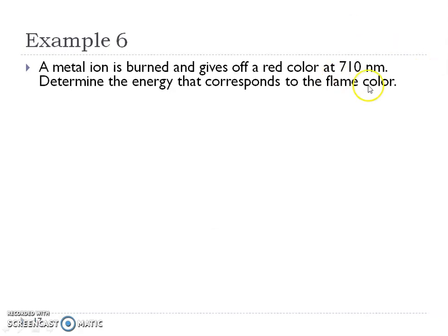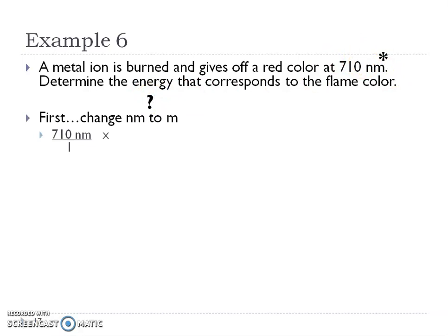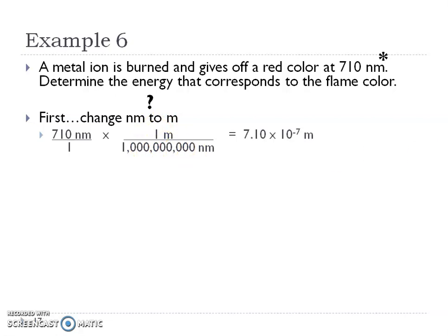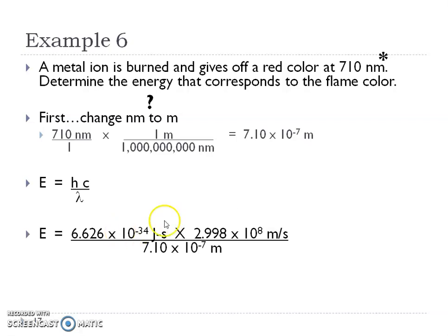Number six: a metal ion is burned and it gives a red color at 710 nanometers. We've got to keep track of those units. Determine the energy that corresponds to this flame color. We can use the energy formula, but first let's convert the nanometers to meters. In this case, nanometers goes on the bottom and meters goes on top. One goes with the larger unit and 10 to the ninth goes with nano. That gives us 7.1 times 10 to the negative 7 meters. Now we can plug and chug with the energy equation — our two constants multiplied and divided by our wavelength in meters — and we should get our answer in joules.